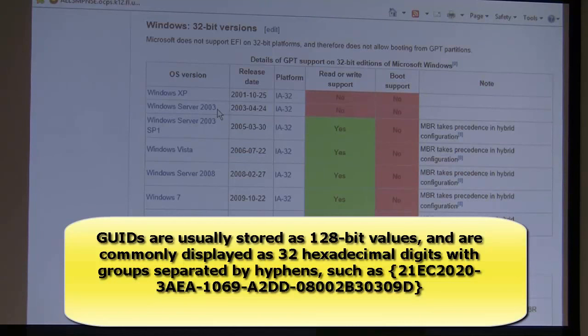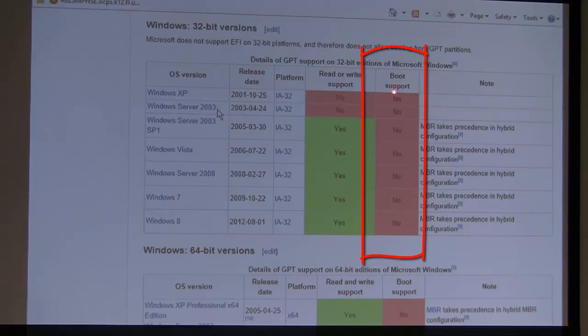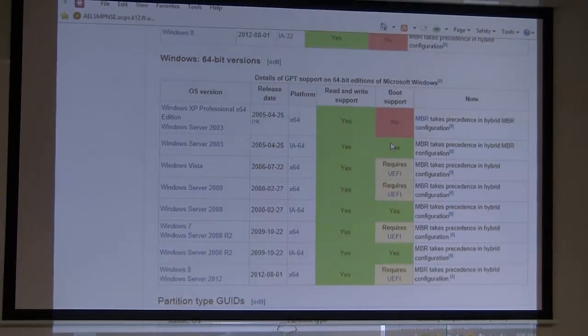Let's take a look, here's 32-bit Windows. You can see the column that shows how many support boot 32-bit. Will they read it and write to it? Yeah. All but probably XP. Now let's go to 64-bit. What happens when we go to 64? Look carefully.